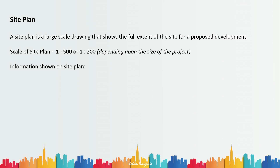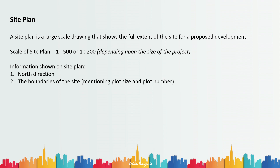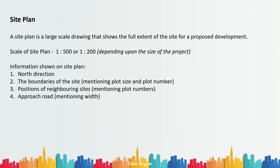Here I'll provide the information that is usually shown in the site plan. These are the things that must be shown — more information can be added based on the requirement of the particular proposed development. Number one is the north direction. Number two is the boundaries of the site, mentioning properly the plot size and the plot number. Number three is the positions of the neighboring sites, mentioning the plot numbers. Number four is the approach road, mentioning the width of that road.